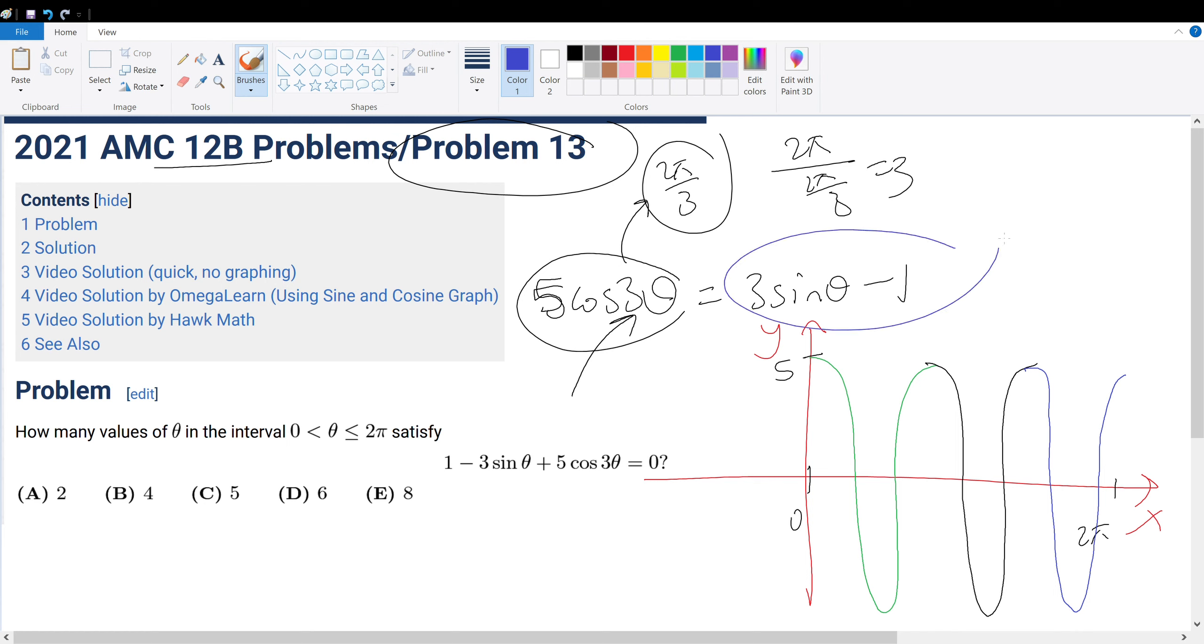Now for 3 sine theta minus 1, that has a period of 2 pi. Now the amplitude of 3, and we shift this down by 1, so negative 1. And this has an amplitude of 3, so this will go up to 2.